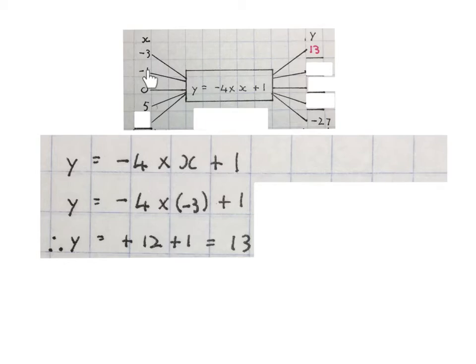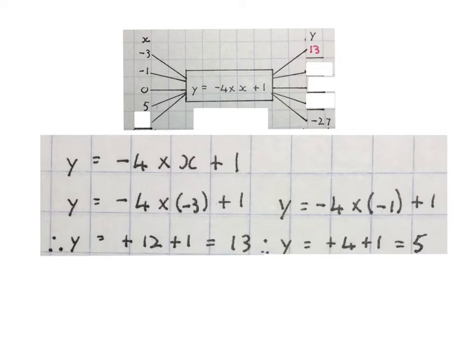Now we do the same with minus one. We substitute it in the place of X into the original equation. It'll look like this. We simplify this side. Minus four times minus one is plus four. Plus that one will give me five. So an X value of minus one using this rule will give me a Y value of five.